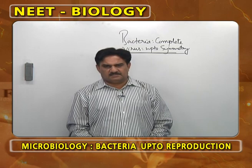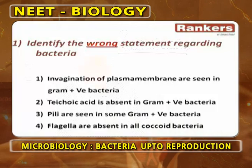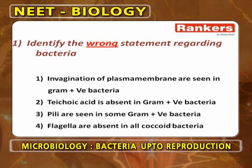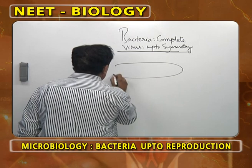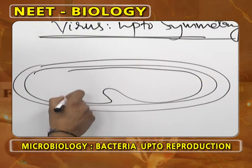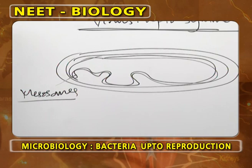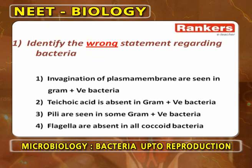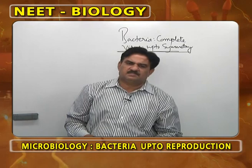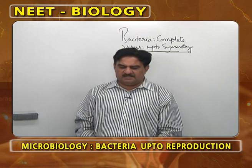Now we discuss some questions on bacteria and viruses. Identify the wrong statement regarding bacteria: invagination of plasma membrane are seen in gram positive bacteria — this is correct. The invaginations of the plasma membrane are popularly called mesosomes. These are found in gram positive bacteria and help in cell division, exchange of genetic material, and distribution of cell organelles to daughter cells.